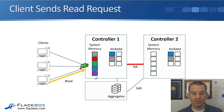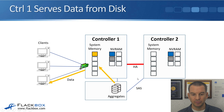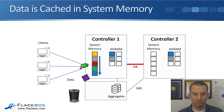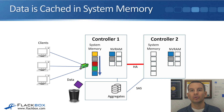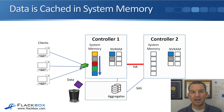If a client then sent in a read request for that yellow data, it's not in the cache anymore, so it would have to be fetched from disk. It would then go into the top slot in system memory, but that's not as fast as if the yellow data had still been in the cache. The more cache you have, the more data you can store there, the higher the chance of serving data from cache, and the better the performance you'll get from the system.